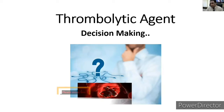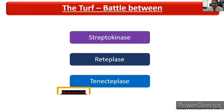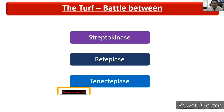Now you must decide which thrombolytic agent to choose. There is a tough competition among streptokinase, reteplase, and tenecteplase. When I was a student during my postgraduate days, streptokinase used to rule, but nowadays it is less used because of its many drawbacks. Second is reteplase and third is tenecteplase — we will see each one.